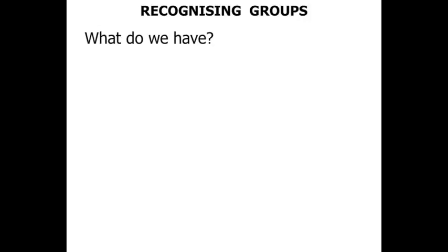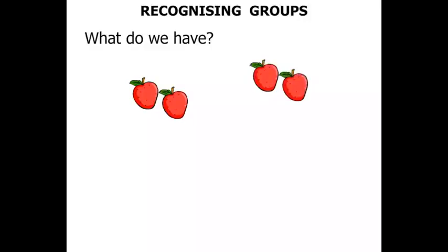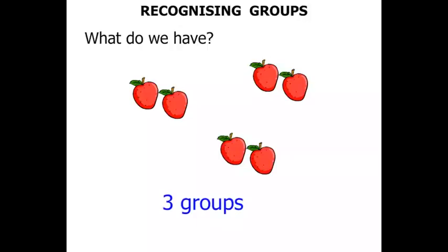Now this question is, what do we have? We've got some strawberries. Some more strawberries there. Some more strawberries again. We've got three groups. But we're going to add a little bit more information. How many in each group? There's two strawberries. So we've got three groups of two. There's two in each group.